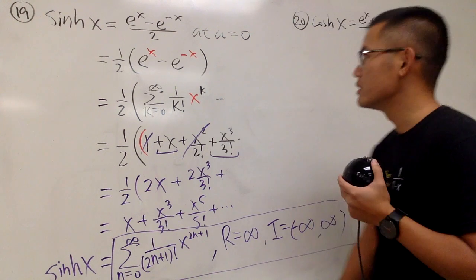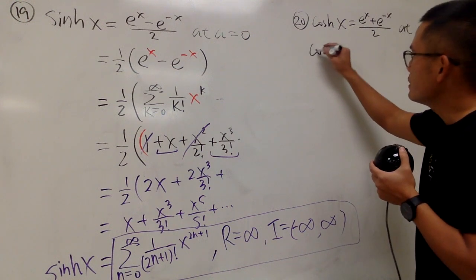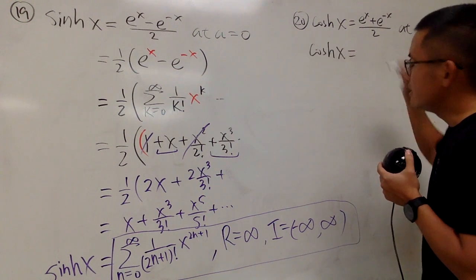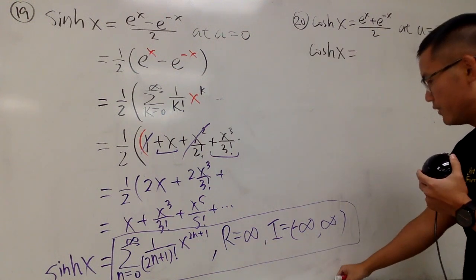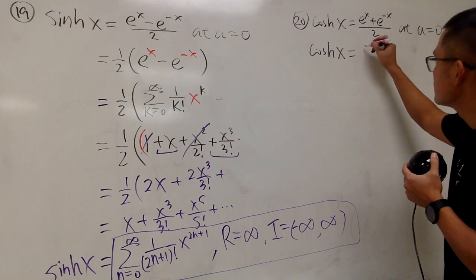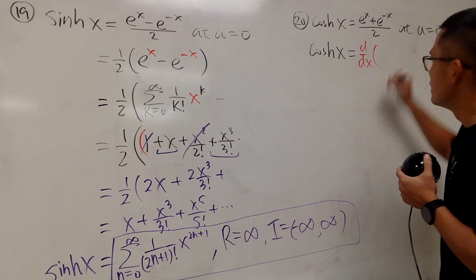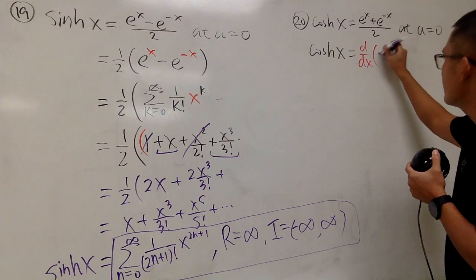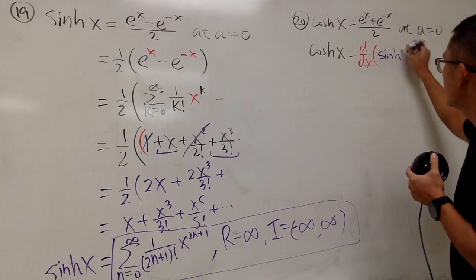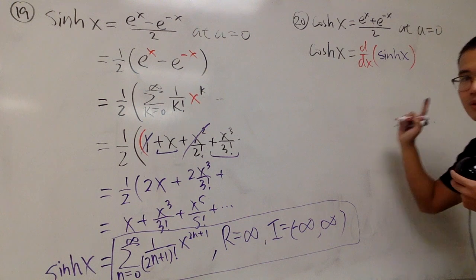But what kind of derivative is this? Well, the truth is cosh is indeed equal to if we differentiate sinh. This is correct. Okay, so this is true.